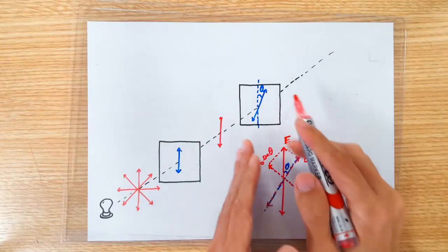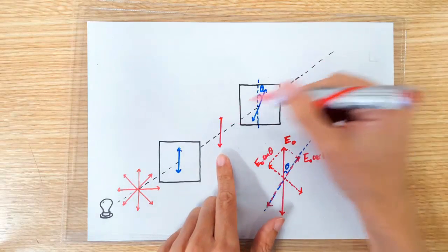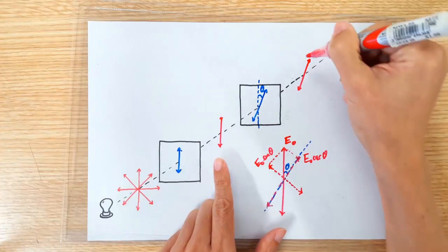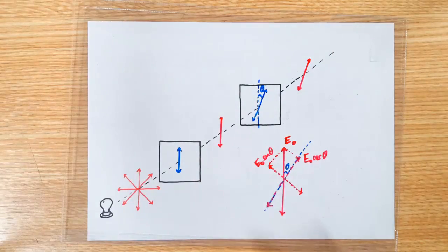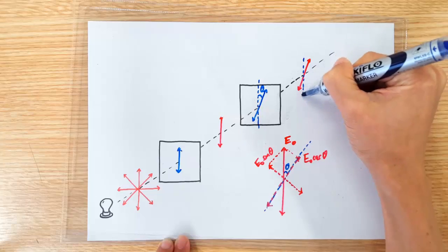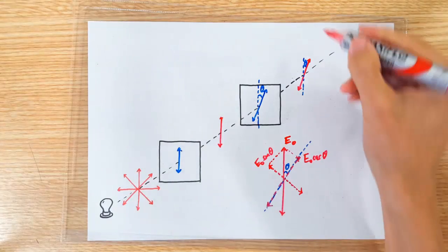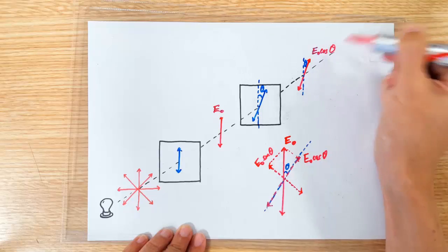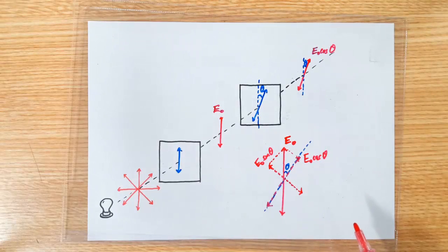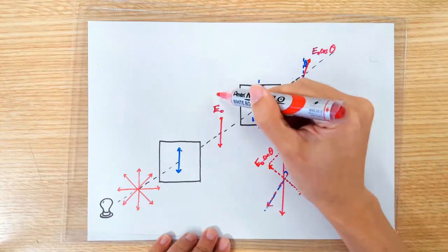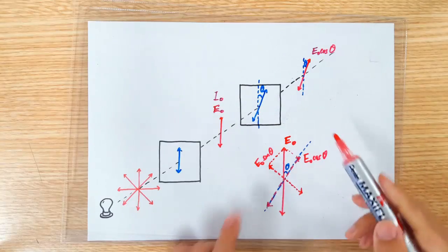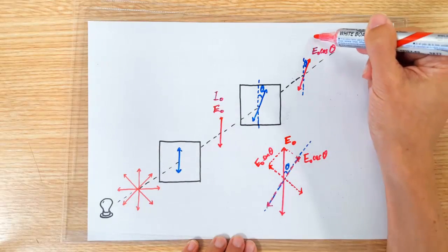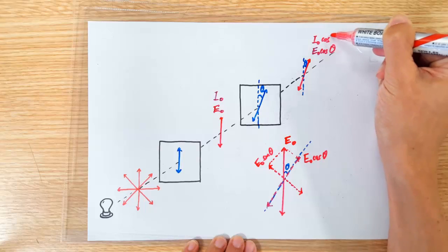So what happens after passing through the polarizer: first, the polarization angle of the beam of light will change — it will align with the polarizer. Second, its amplitude also gets reduced. Before the polarizer it was E naught; after the polarizer it will be reduced to E naught cosine theta. As for intensity — since intensity is proportional to amplitude squared — if before the polarizer the intensity was I naught, then after the polarizer the intensity will have become I naught cosine squared theta.